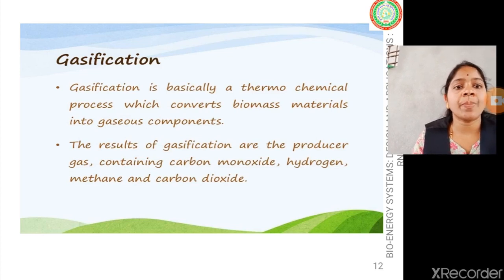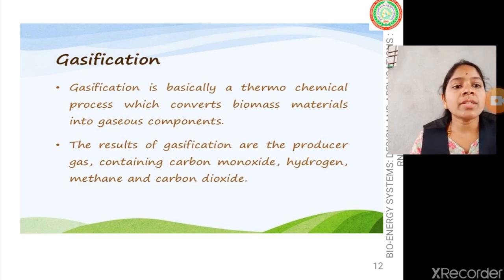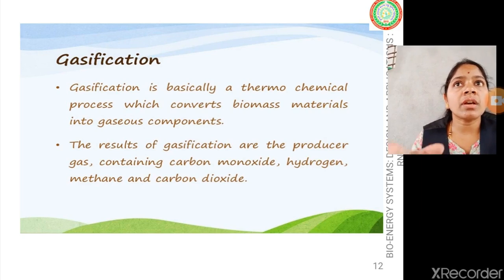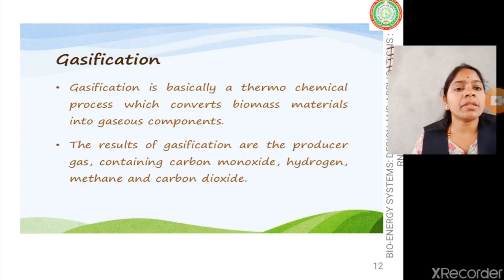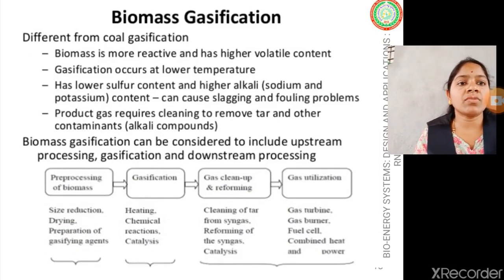Gasification is a thermochemical process which converts biomass material into gaseous compounds. The resultant product is called producer gas, also termed syngas. The major difference between producer gas and syngas is that syngas is a major mixture of other components beyond combustible gases, whereas producer gas mainly consists of combustible gas components: carbon monoxide, hydrogen, methane, and carbon dioxide. Carbon dioxide is a non-combustible gas molecule and can be considered an impurity.